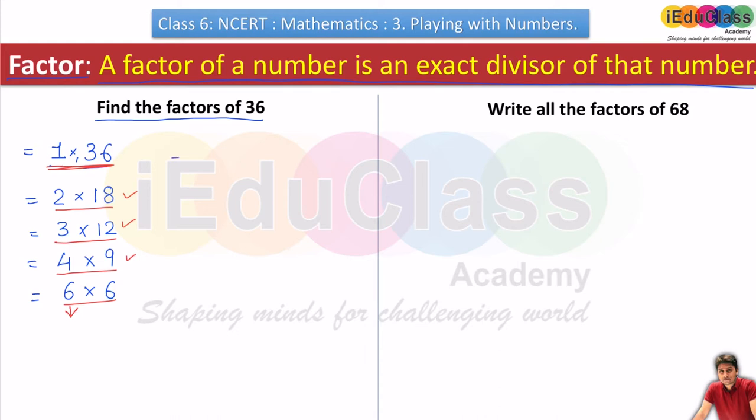So these all numbers are factors. 1 is a factor, then 2 is a factor, then 3 is a factor, then 4, then 6. Six appears two times so we will write only one time. Then 9, then 12, then 18, and lastly 36.